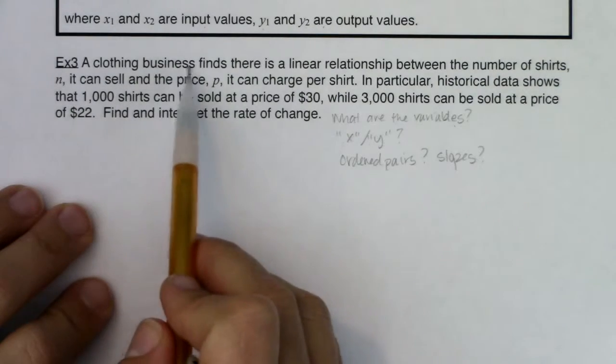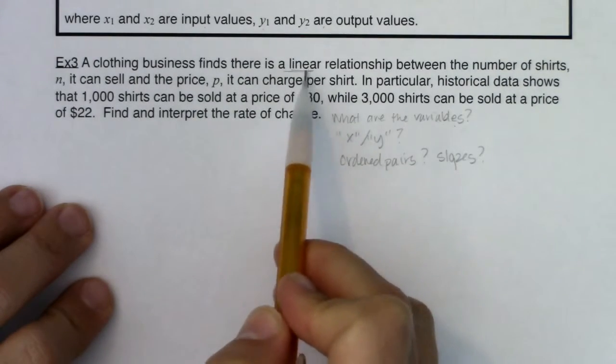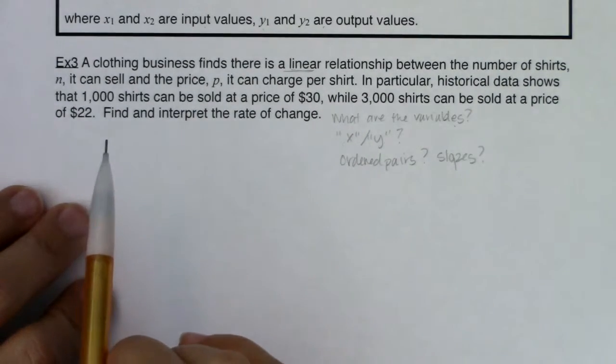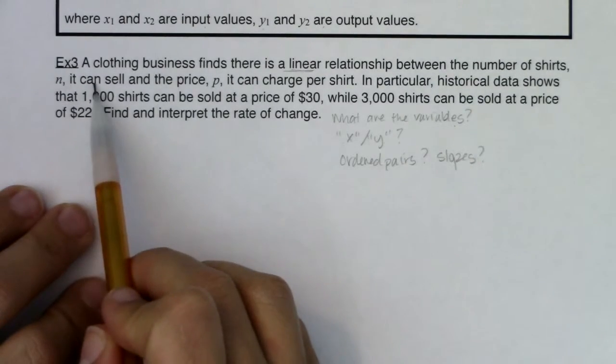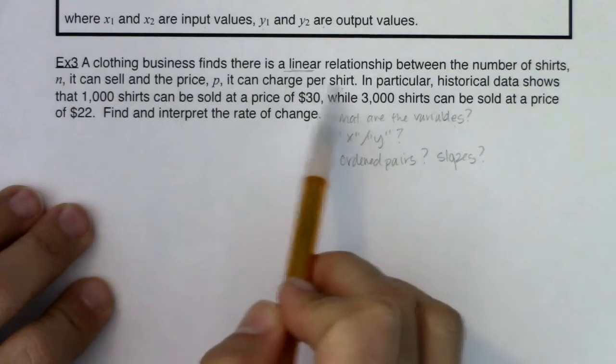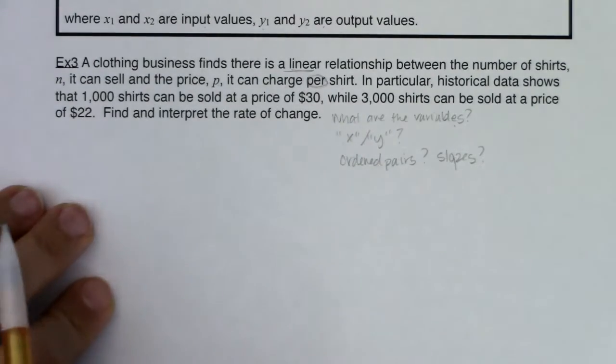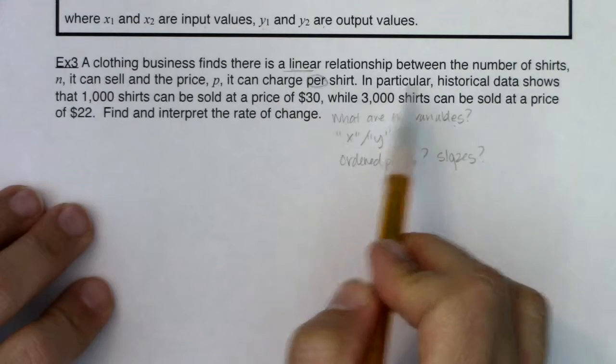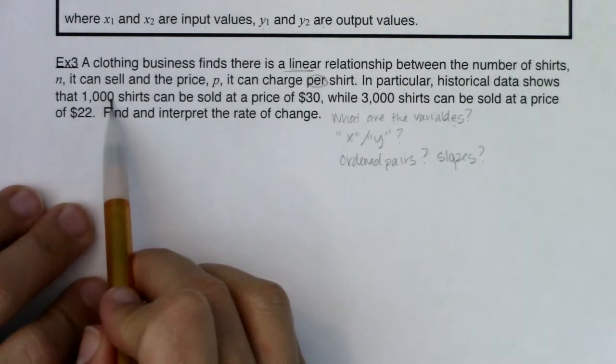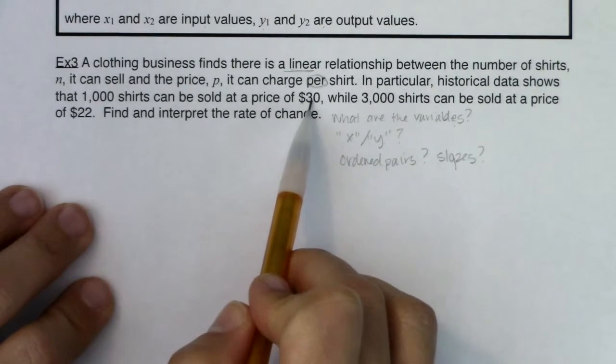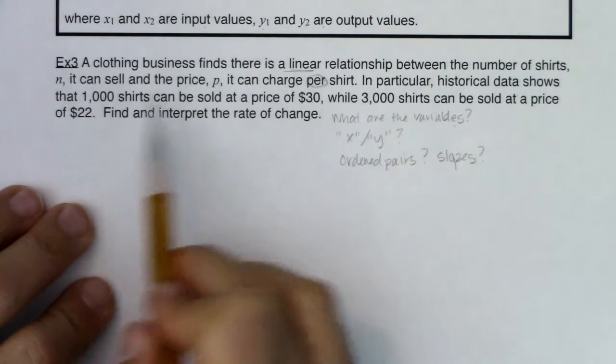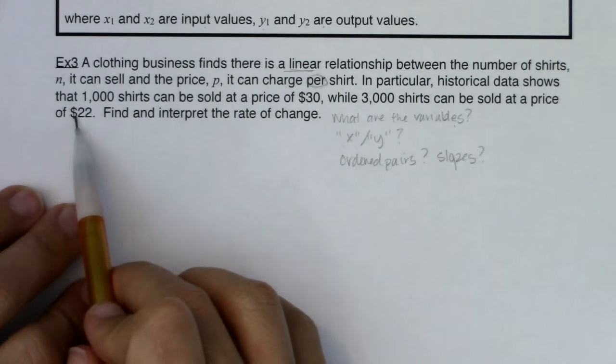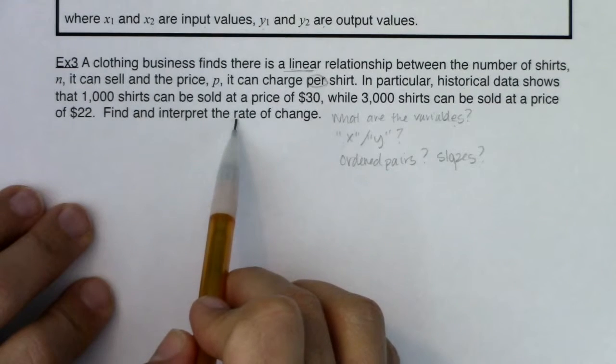All right, here we go. So a clothing business finds there is a linear relationship. So I see linear in there. Linear relationship between the number of shirts, N, it can sell. And the price, P, it can charge per shirt. I see a per popping up. In particular, historical data shows that a thousand shirts can be sold at the price of $30. And it shows 3,000 shirts can be sold at a price of $22. Find and interpret a rate of change.